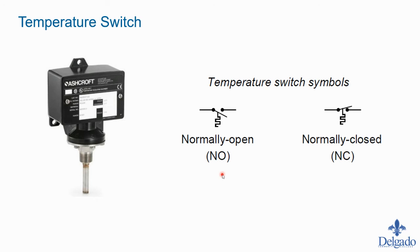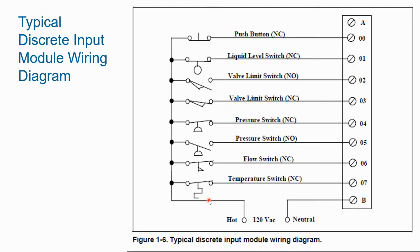A temperature switch works similarly: you buy it at a particular temperature range and use a screwdriver set point to dial in the trip temperature. You specify whether it triggers on rising or falling temperature depending on what you're measuring in the process — whether the temperature is getting too high or too low. The symbol for a temperature switch is a small squiggly line tied underneath the switch contact.